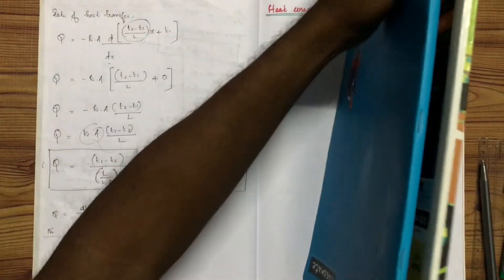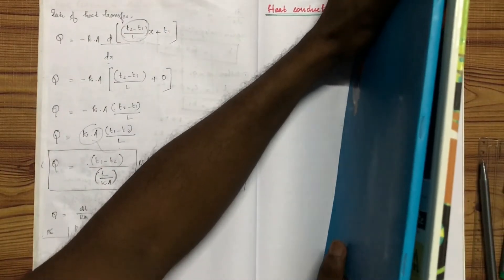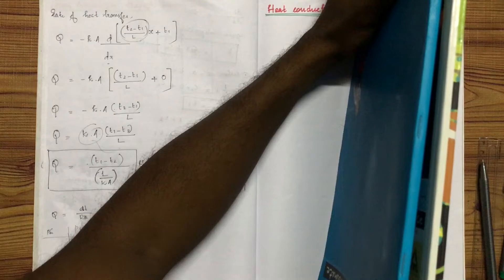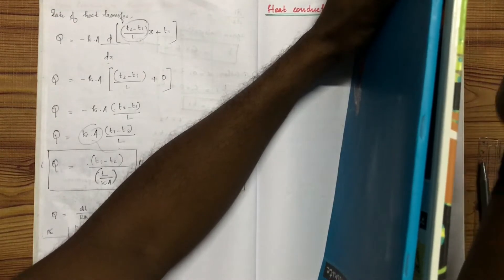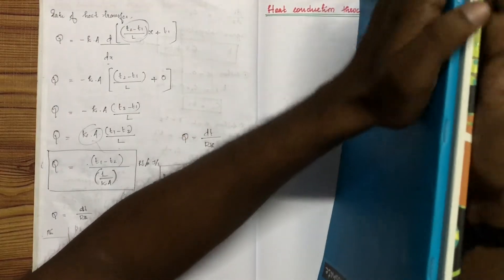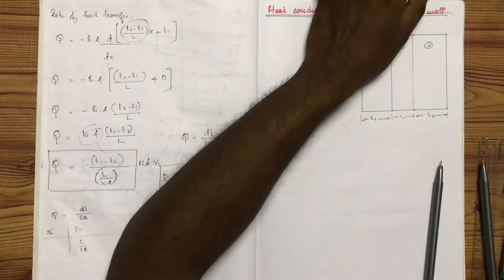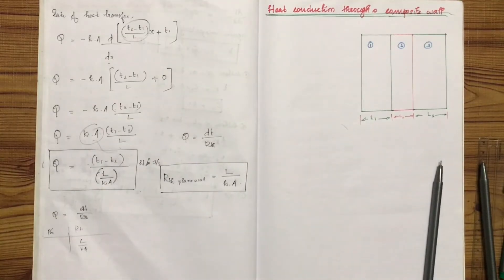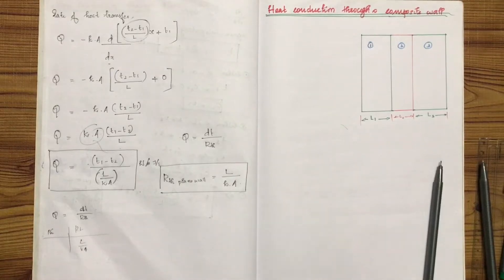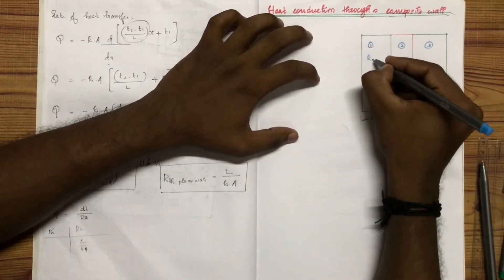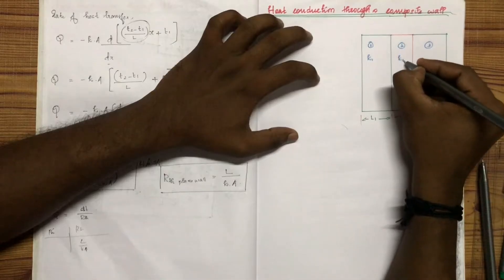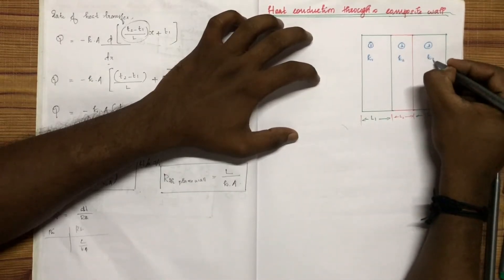This is a particular wall. You need the thermal conductivity — for example, you can denote it as K1. You can transfer the thermal conductivity of the second material as K2. You need it as K3.